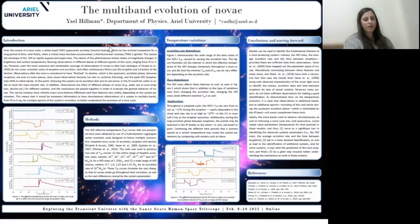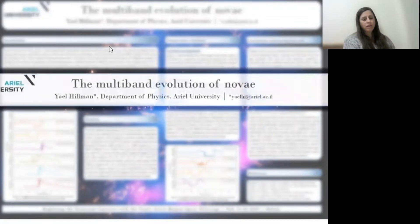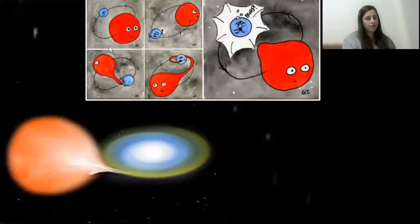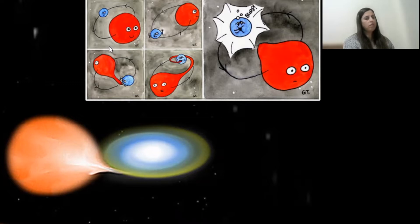Hi, I'm Yael Hillman from Ariel University in Israel. My poster presents some aspects that show the importance of multiband observations of novae. A nova eruption is a sudden brightening that reaches 10,000 times the solar brightness. It very often seems to appear just out of nowhere, and that's because before erupting, there's a very long accretion phase during which the white dwarf slowly and quiescently just pulls mass away from its companion.